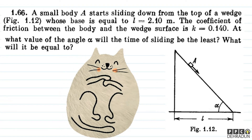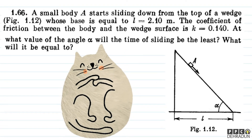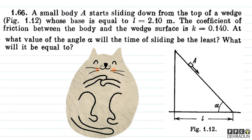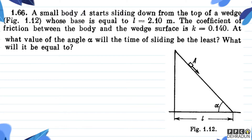The question says: a small body A starts sliding down from the top of a wedge whose base is equal to L = 2.1 meters. The coefficient of friction between the body and the wedge surface is k = 0.14. At what value of the angle alpha will the time of sliding be the least? What will it be equal to?